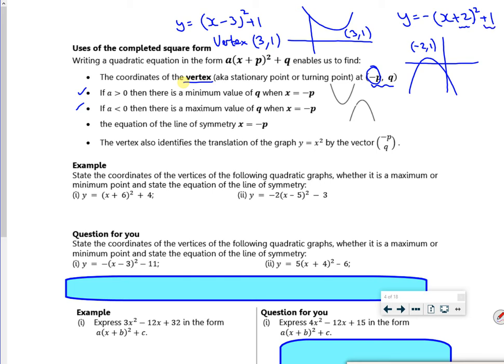The line of symmetry, so if you imagine a mirror line, goes straight down the middle, straight through the vertex. But then the vertex also tells you how we've moved it from x². So the x² graph is there, I've moved it three to the right and one up for that graph there.